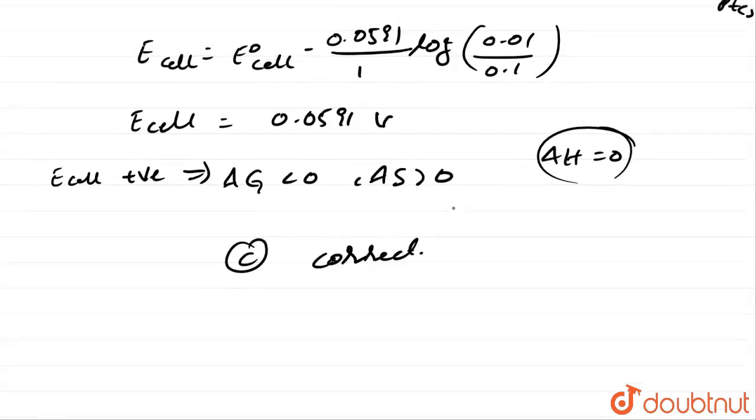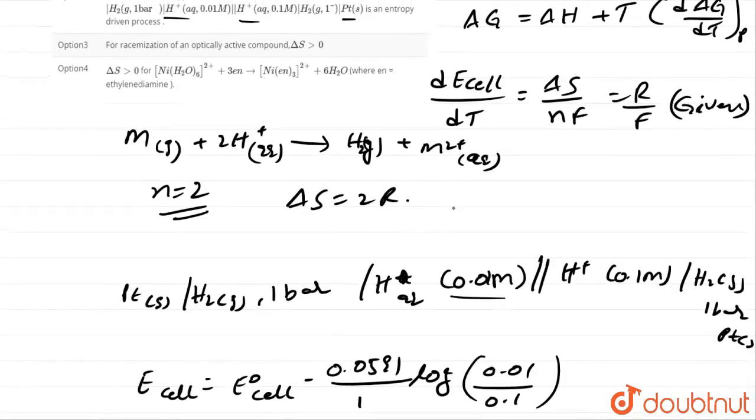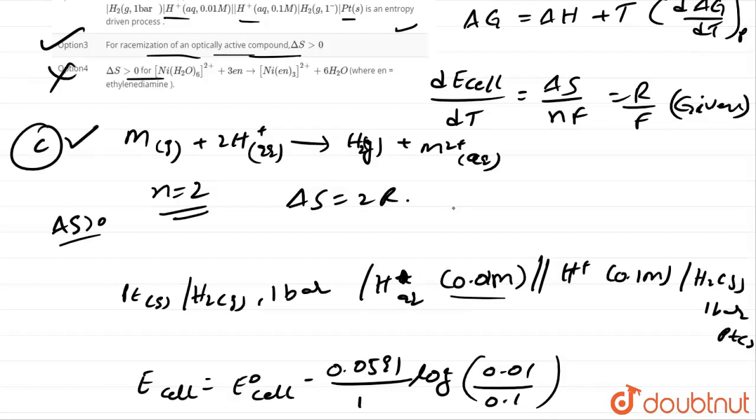Option C will become correct here. See how. In option C they given that for racemization of optically active compounds delta S value is greater than 0. Here for this electrode cells, delta S value become 0. Option C is correct. And delta S value greater than 0 they given, for this one greater than 0, this one is also wrong option. Option C only here the correct option. This is the answer. Thank you.